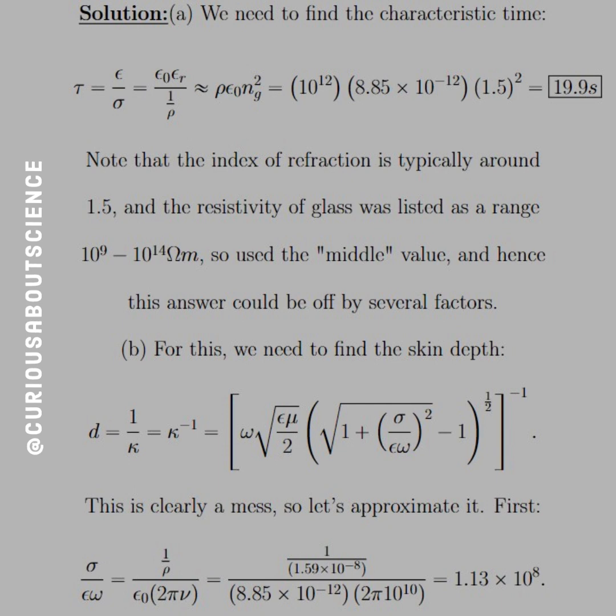For this, we need to find the characteristic time, given by tau equal epsilon over sigma, where sigma is the conductivity. Epsilon is the permittivity of free space times the dielectric constant or relative permittivity epsilon_r. Sigma is the conductivity, rho is the resistivity, so substitute them in and push it through.